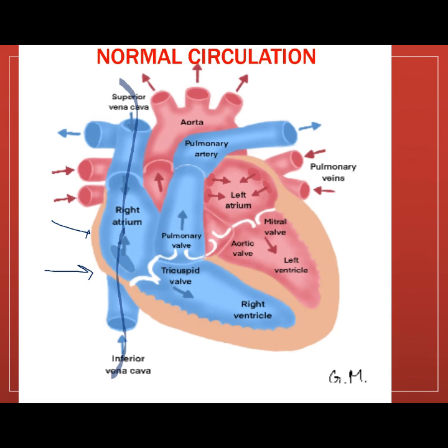The deoxygenated blood drains into the right atrium, and when that contracts, the tricuspid valve opens and the right ventricle dilates to receive the blood.